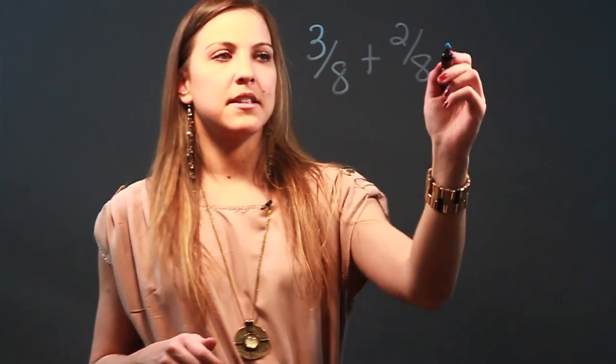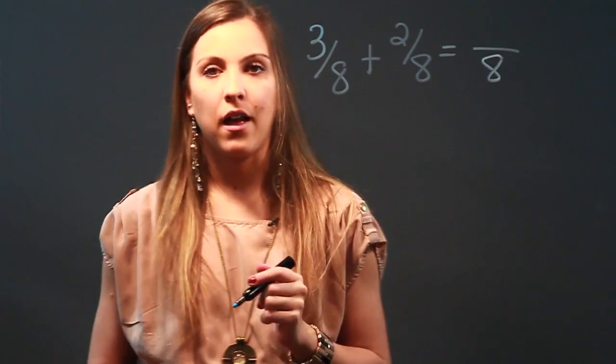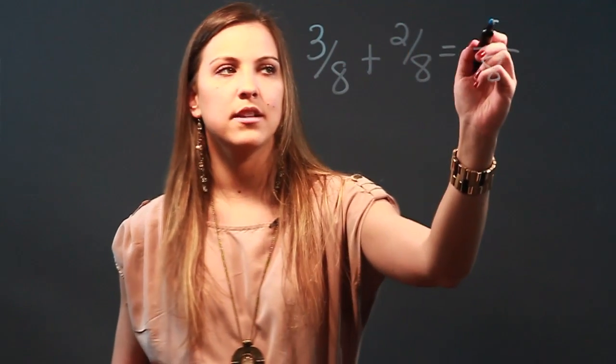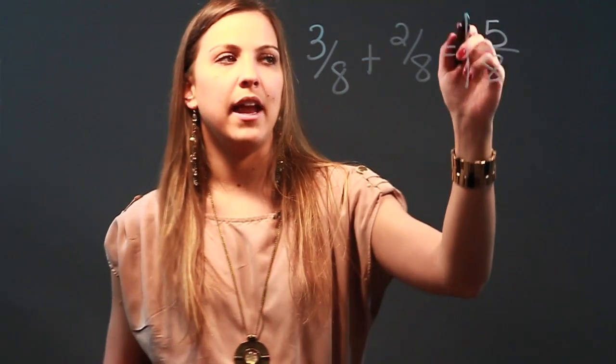I'm going to go ahead and add these fractions, and since their denominator is the same, I'm going to keep it and add the numerators. 3 plus 2 is 5. So when I add 3 eighths plus 2 eighths, I get 5 eighths.